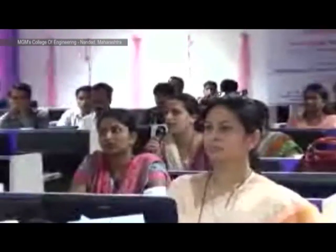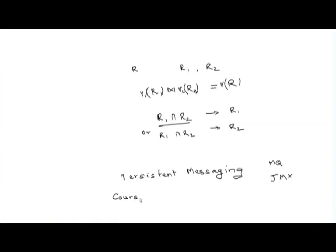Question from MGM College Nandit: Can we have a relation between two weak entities, and do we need a discriminator for that relation? In yesterday's discussion, course is a strong entity. Assignment is a weak entity set dependent on course. Submission in turn is a weak entity set dependent on assignment. We also had a version where submission was dependent on the user who submitted it.